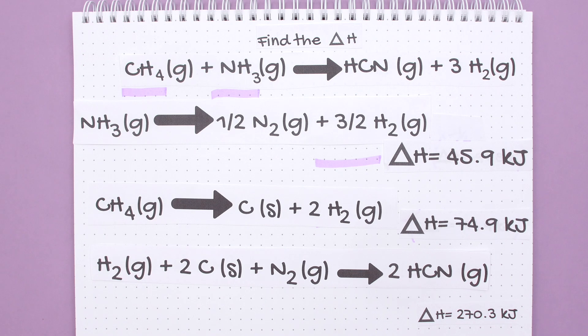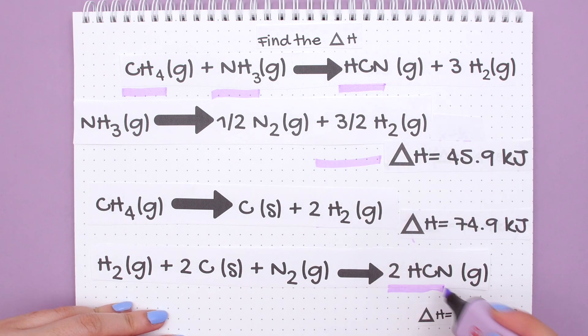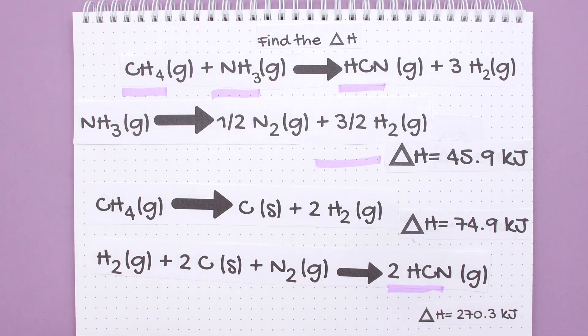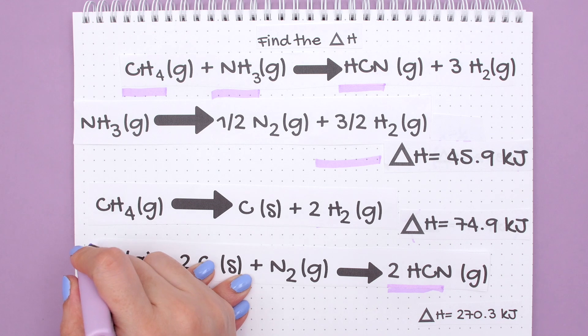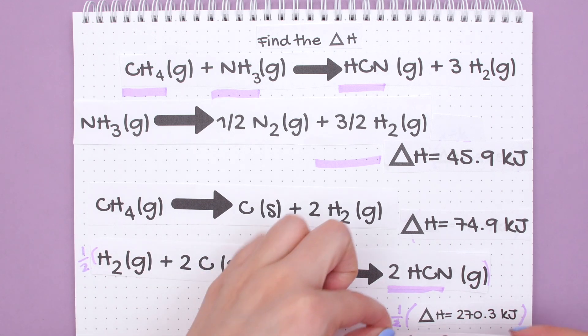Now to our first product of HCN. This is on the correct side but once again we have too many. In order to make this 2 HCN a 1, we will multiply the entire reaction by one-half and multiply the enthalpy change by one-half as well and we'll get this new value.